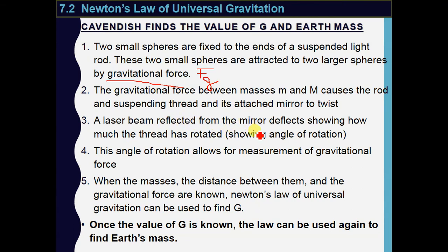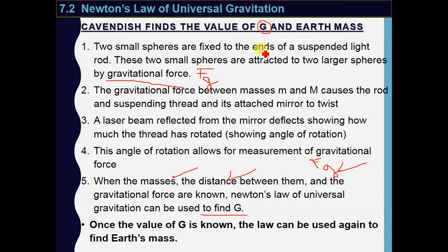A laser beam reflected from the mirror deflects, showing how much the rod has rotated, and hence how strongly the masses are attracted. When the beam deflects, it changes direction and shows us the angle of rotation. This angle of rotation lets us find FG. Once FG is found, and the masses and distance are known, we can find G. This is how Cavendish found the value of G, which is 6.673 times 10 to the power of negative 11. We have to memorize it. Using this value, the law is then used to find the Earth's mass.